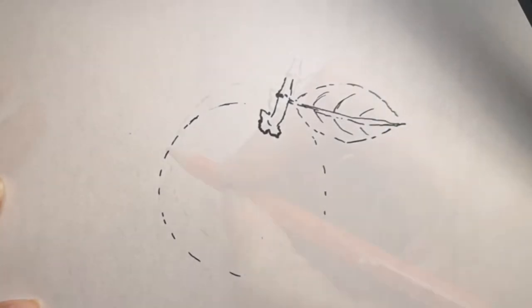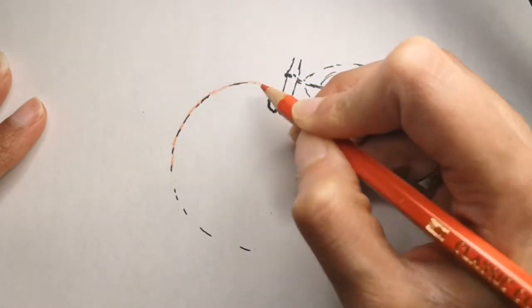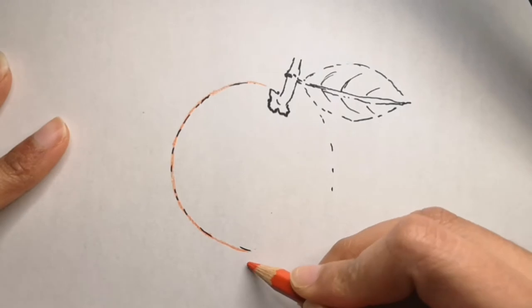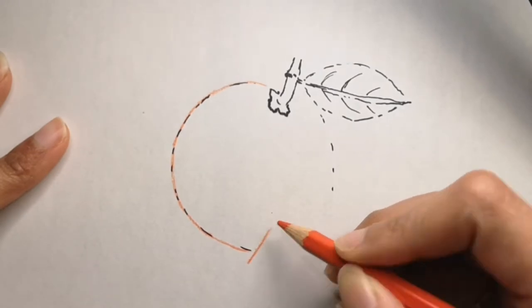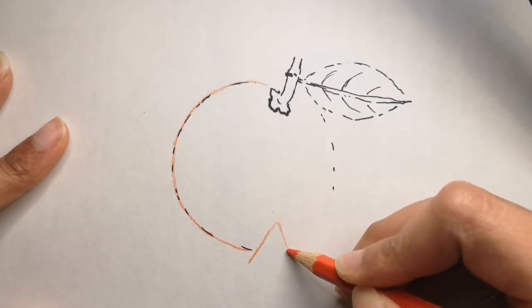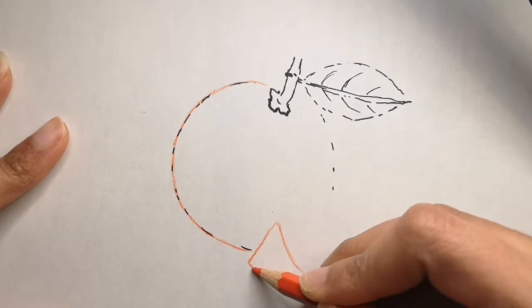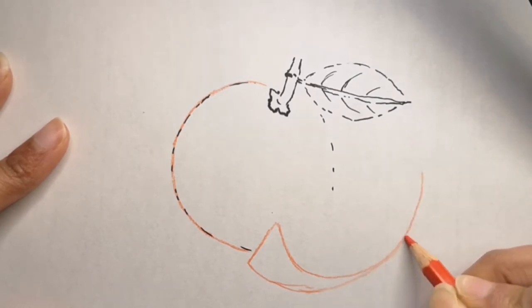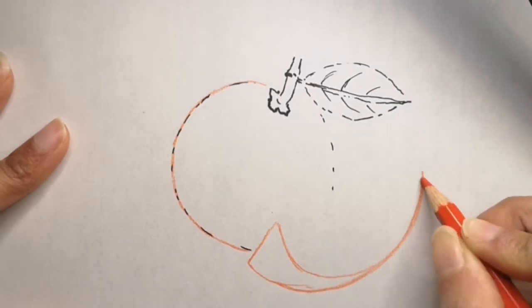Don't forget to send me your drawing to my Facebook or Instagram or just connect with me and all the information is in the description box below for you. Now I'm just drawing the half, like the piece of the orange with my color pencil.